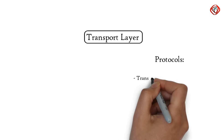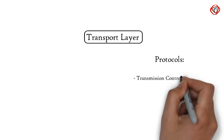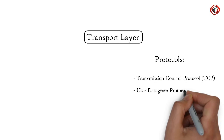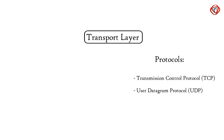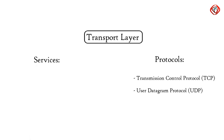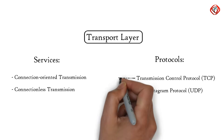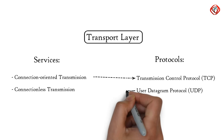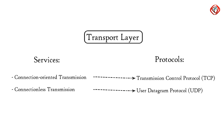Protocols of the transport layer are Transmission Control Protocol (TCP) and User Datagram Protocol (UDP). The transport layer performs two types of services: connection-oriented transmission and connectionless transmission. Connection-oriented transmission is done via TCP, while connectionless transmission is done via UDP.